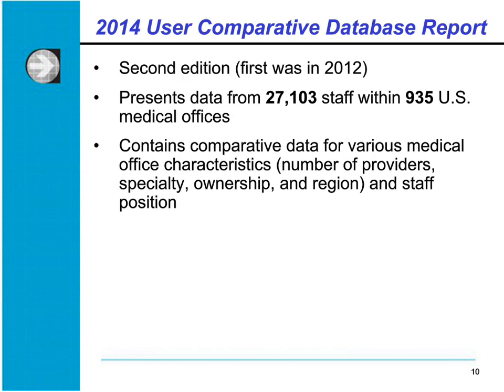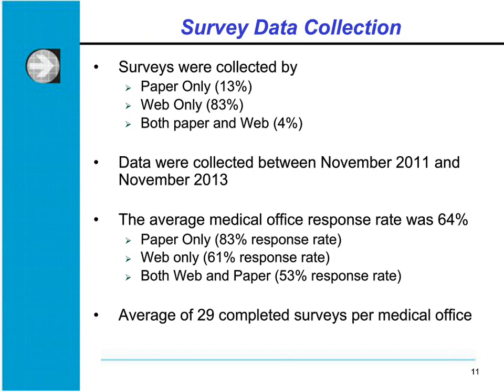The 2014 User Comparative Database Report is the second edition, presenting data from 27,103 staff within 935 U.S. medical offices. It contains comparative data across various medical office characteristics including number of providers, specialty, ownership, region, and staff positions. The majority of medical offices — 83 percent — collected surveys via web. Data were collected between November 2011 and November 2013, with an average response rate of 64 percent and an average of 29 completed surveys per medical office.